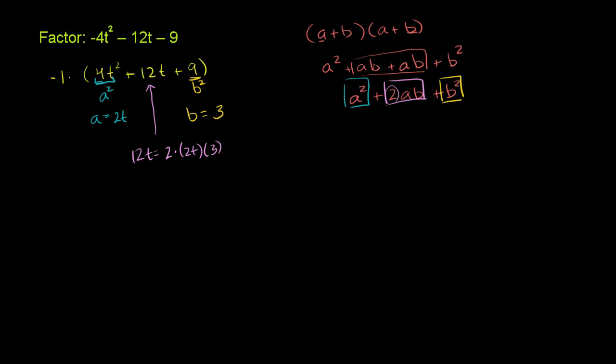So if you wanted to factor this, the stuff on the inside, you still have that -1 out there, the 4t² + 12t + 9, you could immediately say that's going to be (a+b) times (a+b), or (2t+3) times (2t+3). Or you could just say it's (2t+3)². It fits this pattern.